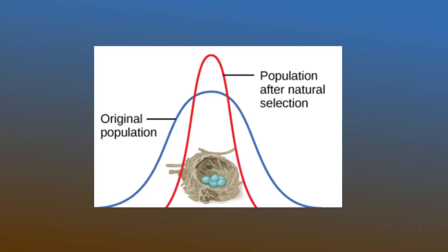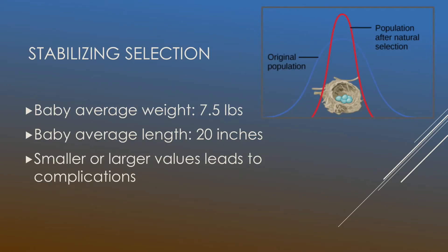And of course the red is showing us what happens after the natural selection. And so the best example of this is the newborn baby weight and length. And so an average weight is generally 7.5 pounds whereas an average length is 20 inches.